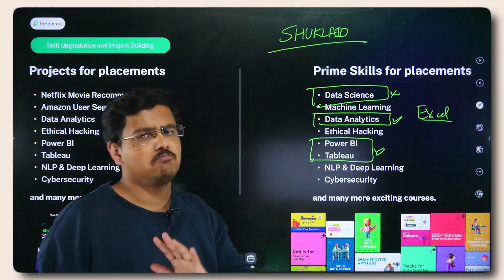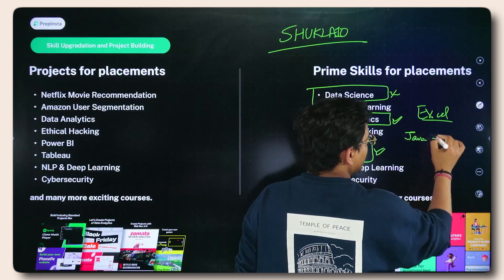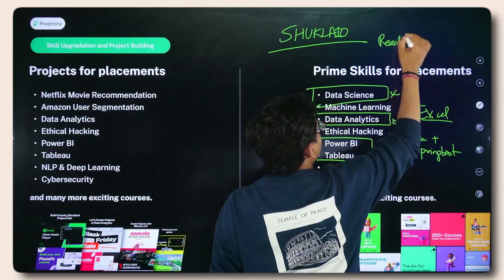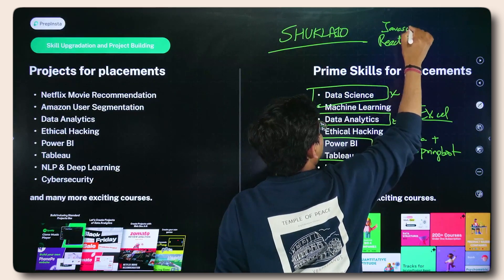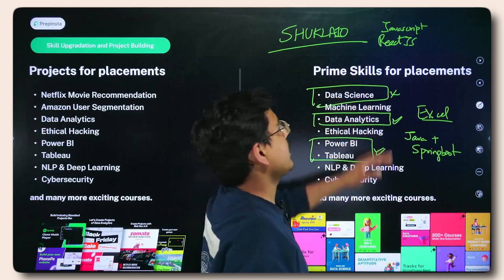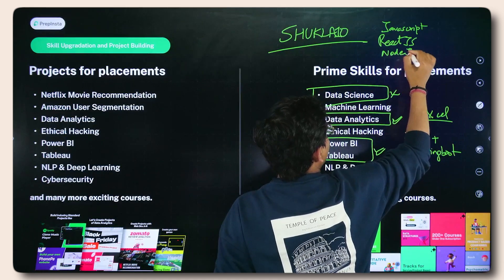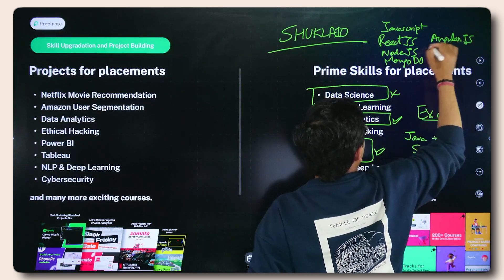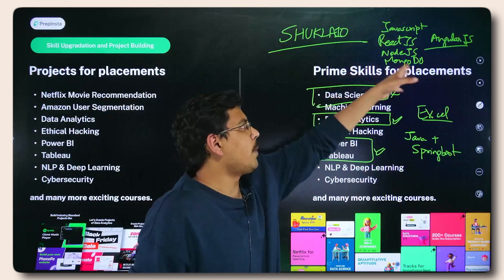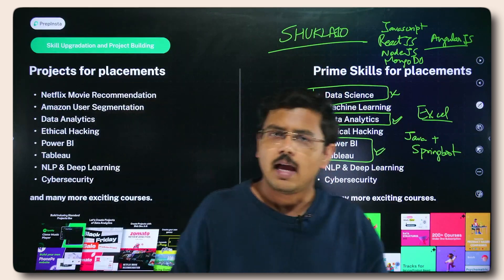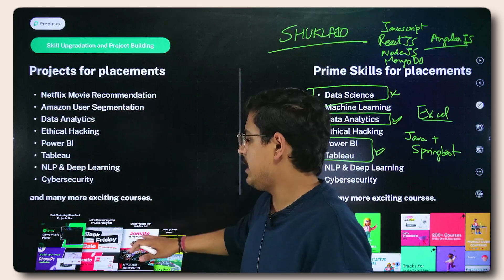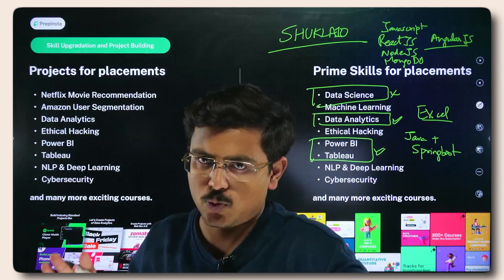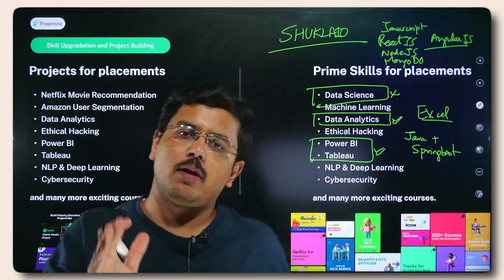If you want to be a software engineer, go for Java plus Spring Boot. Or if you don't want to learn Java, you can learn JavaScript — note that Java and JavaScript have no relation, they are entirely different languages. Learn ReactJS, NodeJS, MongoDB, and Express or AngularJS, as AngularJS is nowadays in demand. This whole bunch is full stack development. Learn this or learn these three skills and you're good to go. Build some good projects — you can find ideas on prepinstaprime.com, or on this YouTube channel where I've built top five final year projects with full resume descriptions.